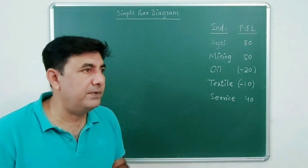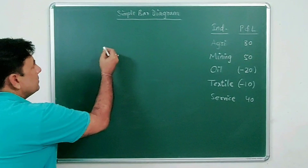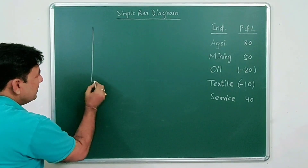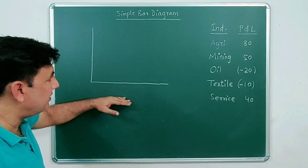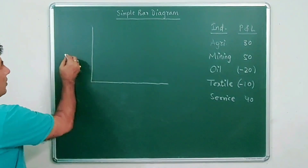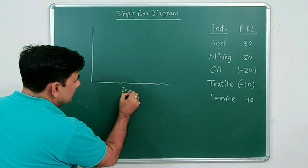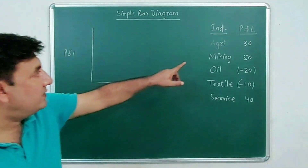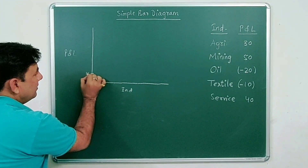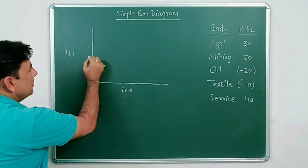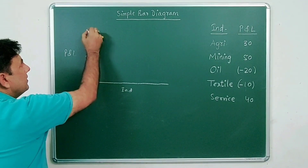Let's see how to draw a simple bar diagram using these figures. You can take the x-axis as industries and the y-axis as profit or loss. The gaps on the y-axis are of 10, so you can mark 10, 20, 30, 40, 50, with zero at the origin.